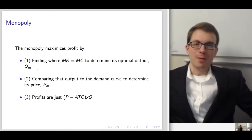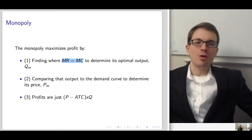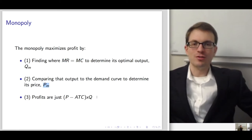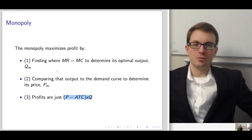Monopoly maximizes profit by finding where marginal revenue equals marginal cost — that determines optimal output. Then it compares the output to the demand curve to determine the optimal price. Profits are price minus average total cost times quantity — this rectangle.